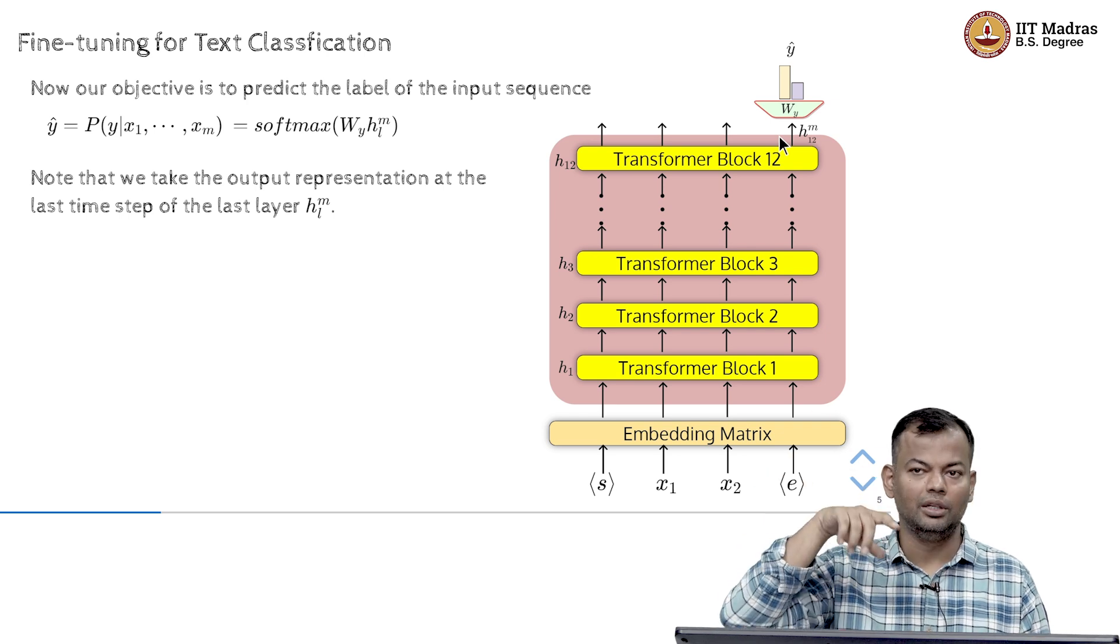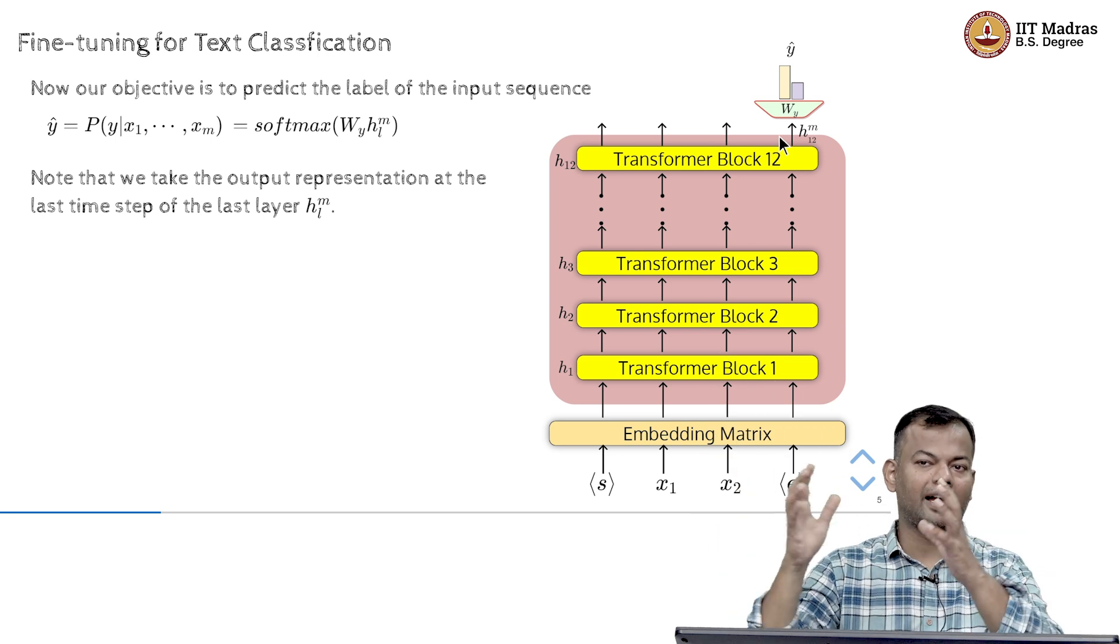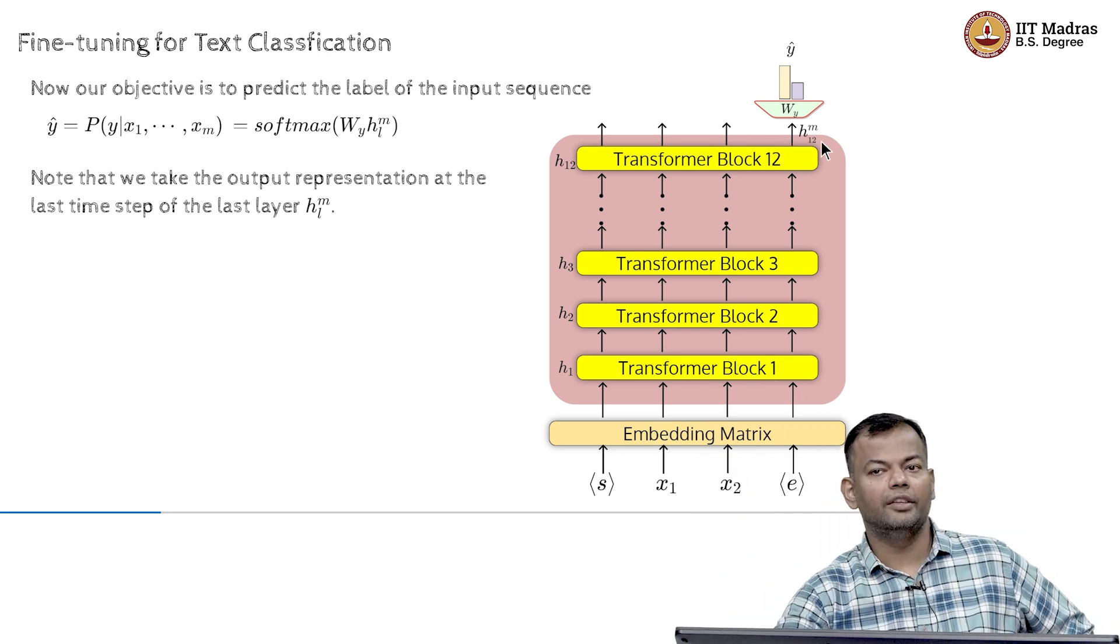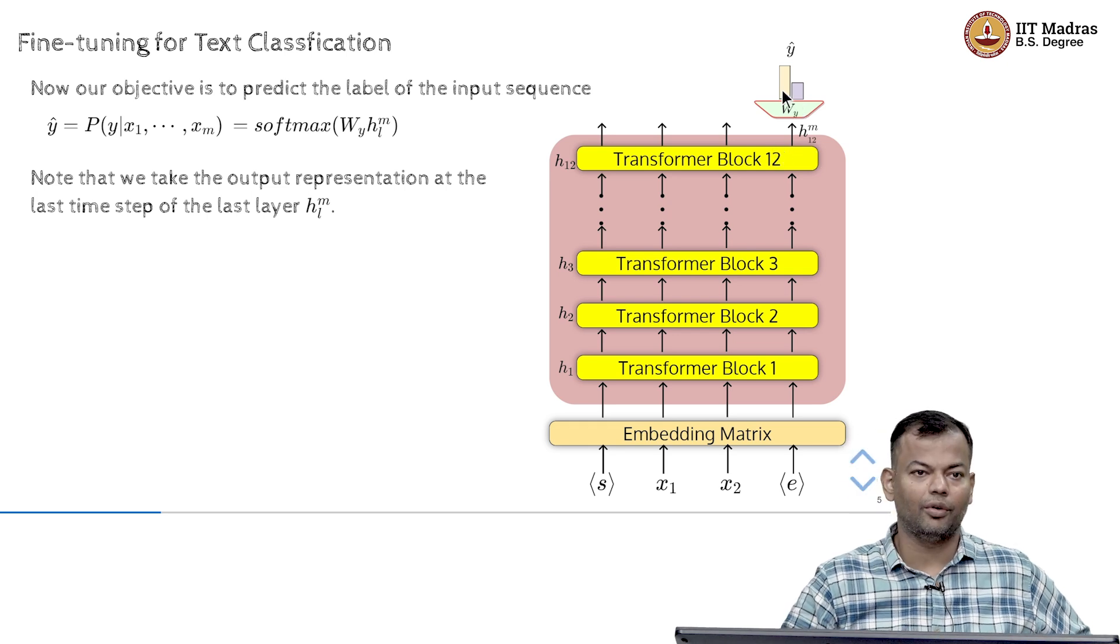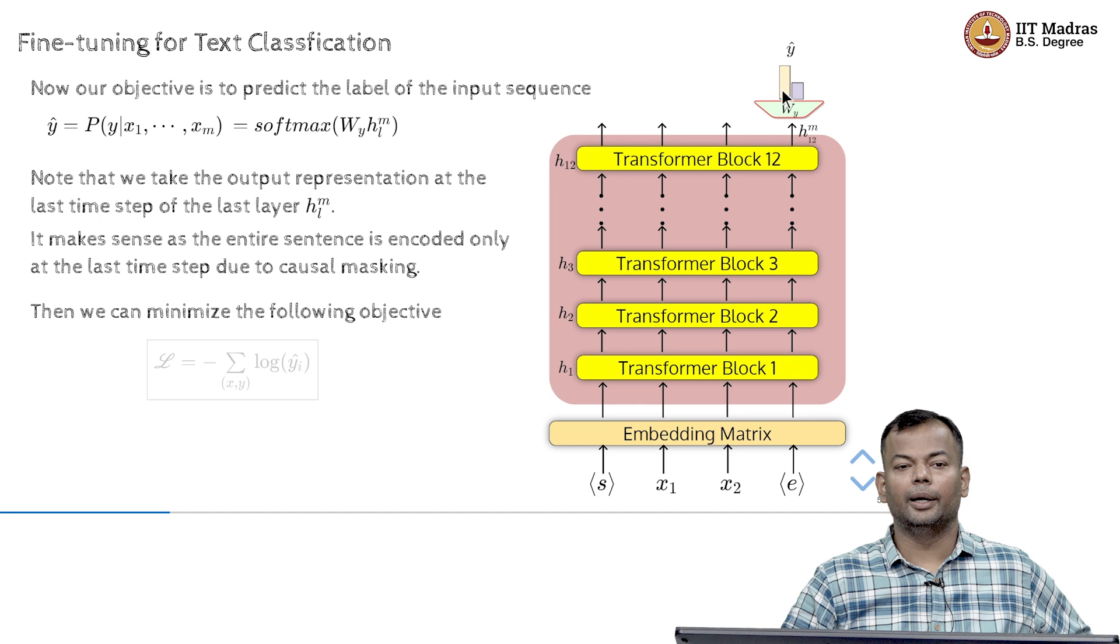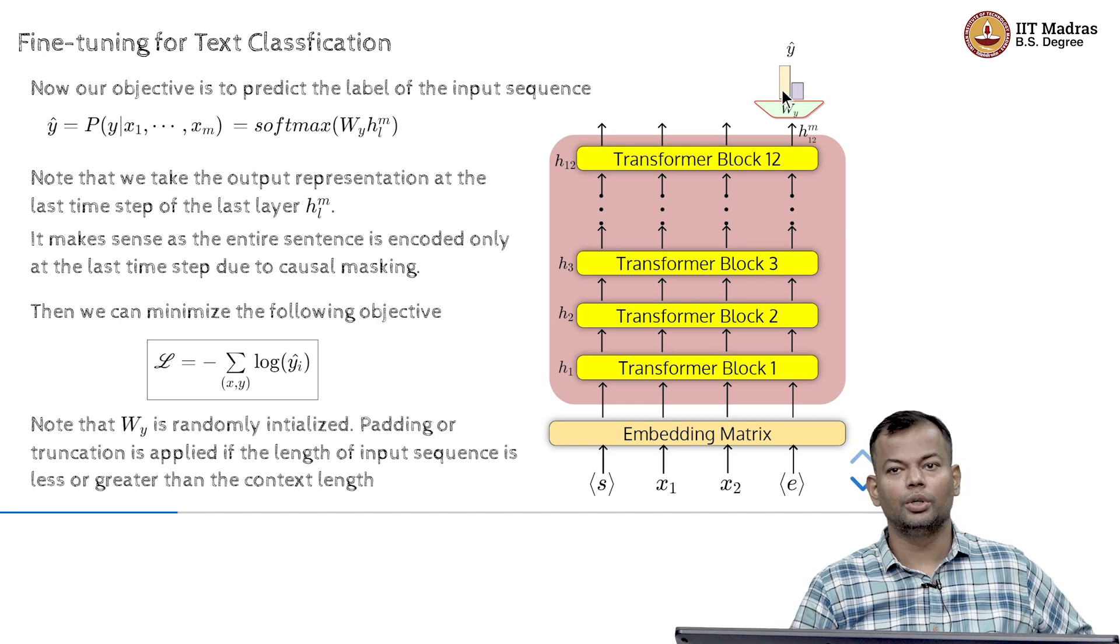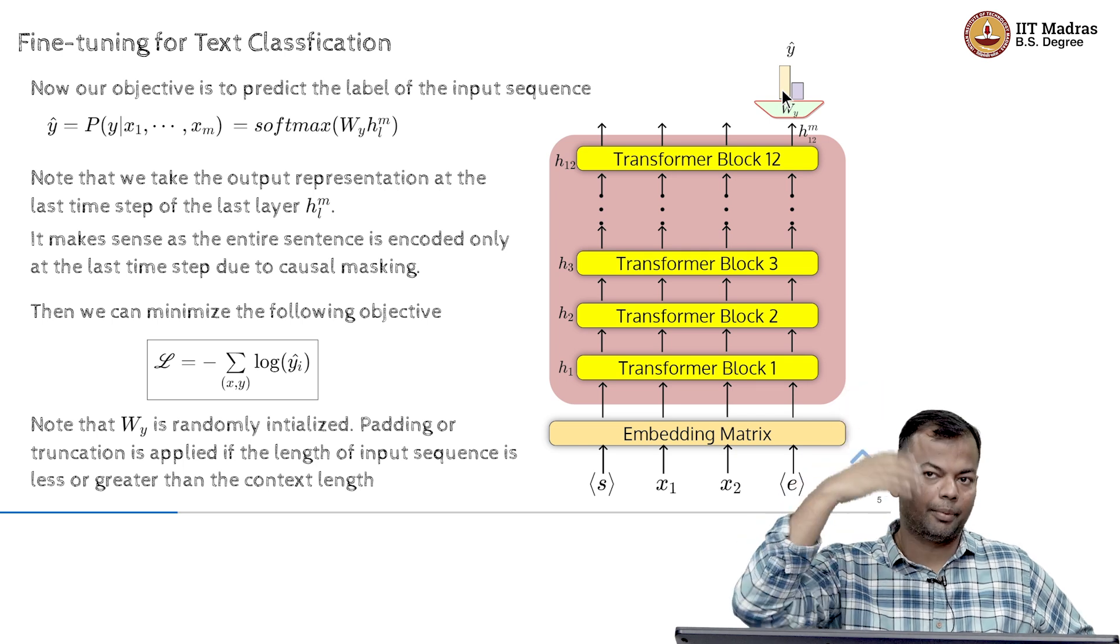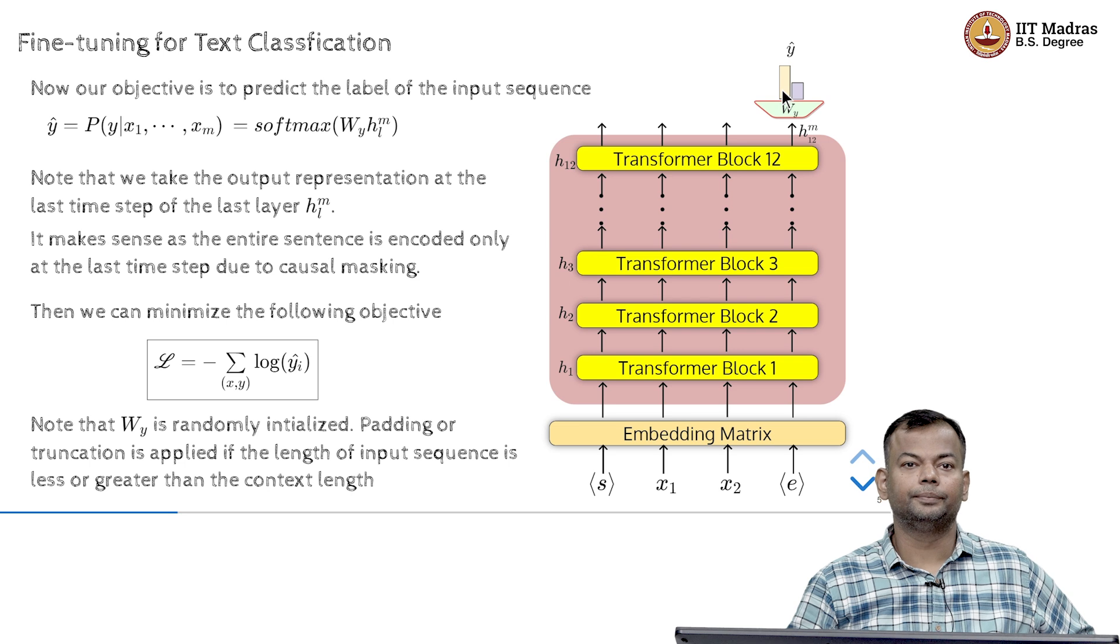So, at the last token, it has seen all the previous tokens and sort of aggregated information from there. So, now this has sort of all the information about the sentence and using that, I want to predict the label whether it is positive or negative. And we can then use the standard cross entropy loss to do the back propagation and then update the parameters of the model.